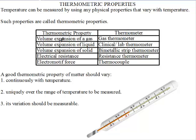Volume expansion of gas — we know that when gases are heated they expand, and this is employed in the gas thermometer. Volume expansion of liquids — we can see this in the clinical or lab thermometer. Volume expansion of solids — we can talk about the bimetallic strip thermometer. Electrical resistance — we have the resistance thermometer. And then we have the electromotive force, which is found in the thermocouple.